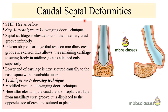Caudal septal deformities are another type of deviated nasal septum that must be addressed differently. There are two techniques: the swinging door technique and the doorstop technique. In the swinging door technique, the septal cartilage is elevated out of the maxillary crest groove inferiorly, the inferior strip of cartilage resting on the maxillary groove is excised, allowing the remaining cartilage to swing freely to the midline, since it is attached superiorly to the skull base. The lower end is then secured to the nasal spine of the maxilla with absorbable suture.